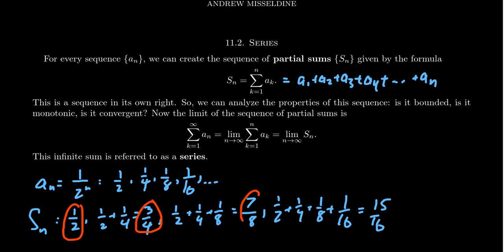And so the members of this sequence would be 1 half, 3 fourths, 7 eighths, 15 sixteenths. And so we create a new sequence from a previous sequence by adding together all the terms.